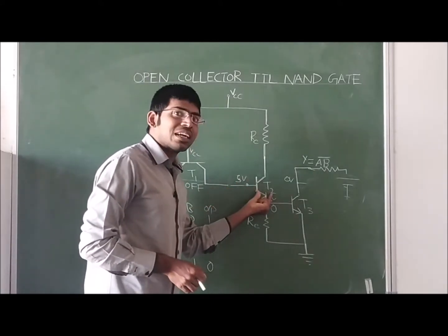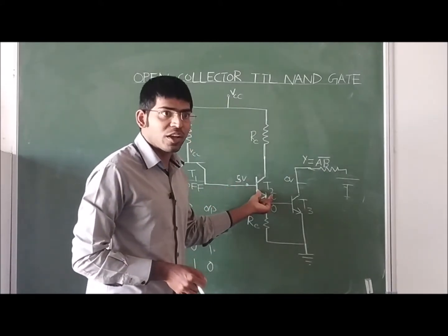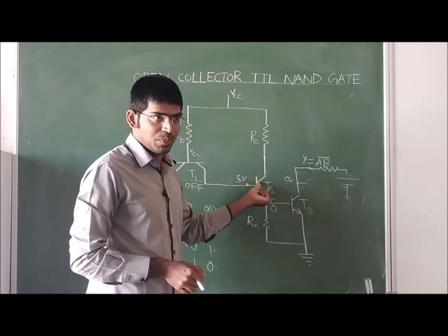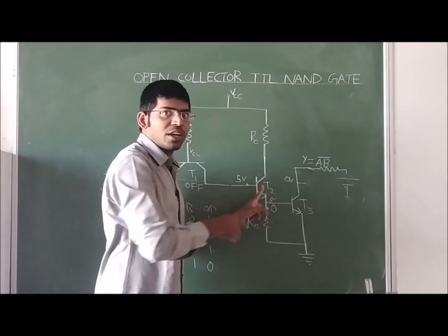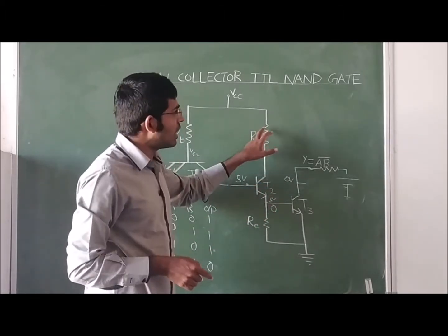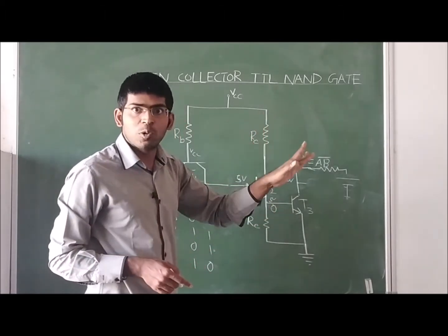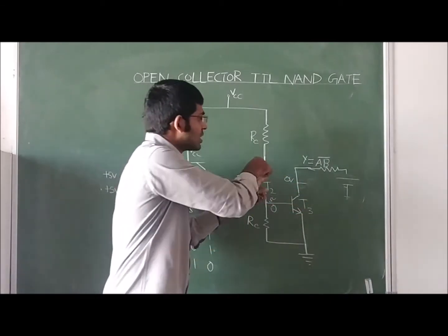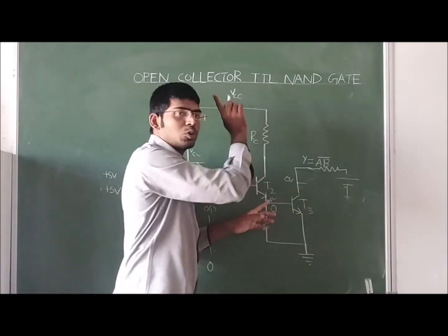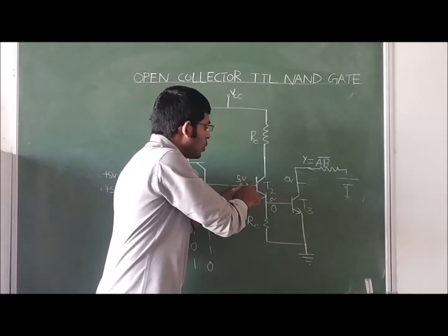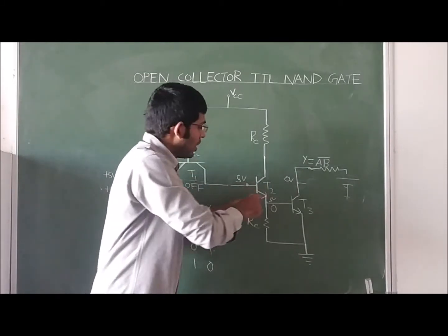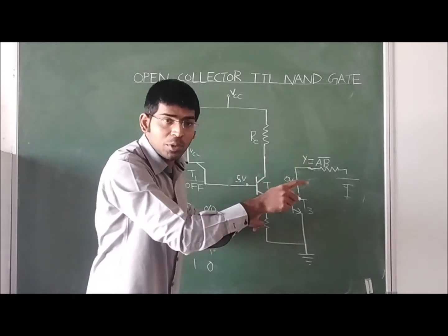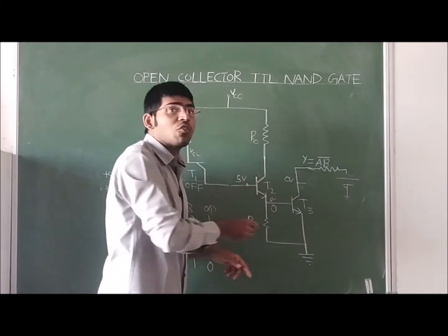T2 is connected in Common Collector configuration. In the Common Collector configuration we do not use the collector either for giving the input or for taking the output. So this collector terminal is connected to supply. We give input to the base terminal and take the output from the emitter terminal. This is an emitter follower.